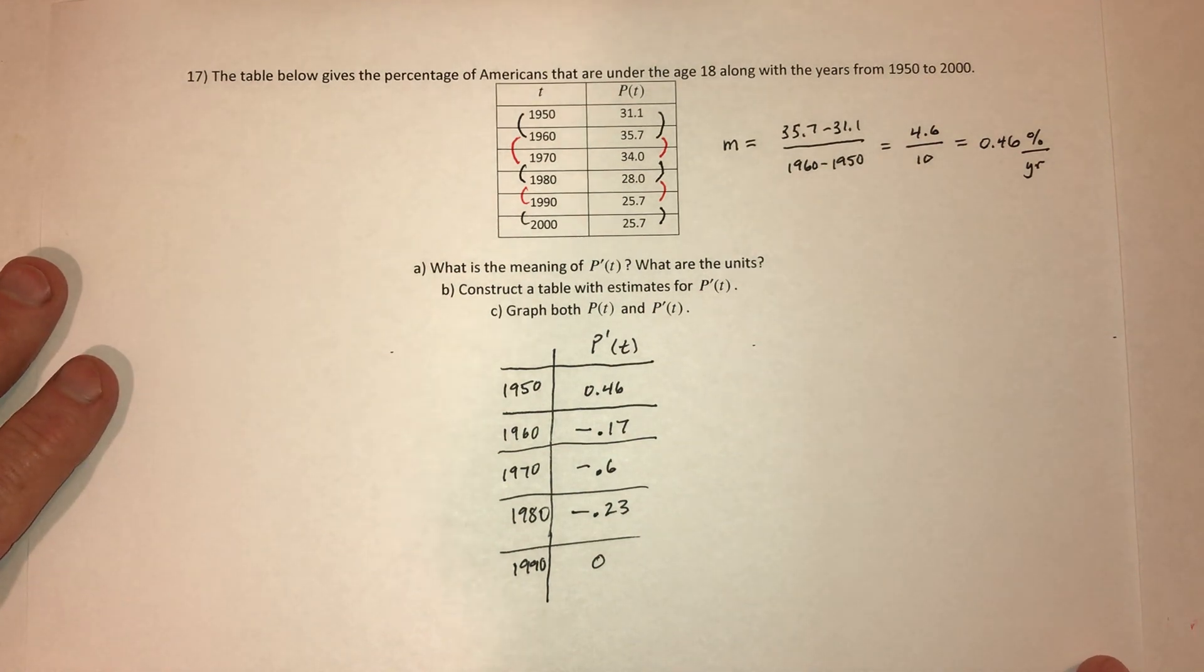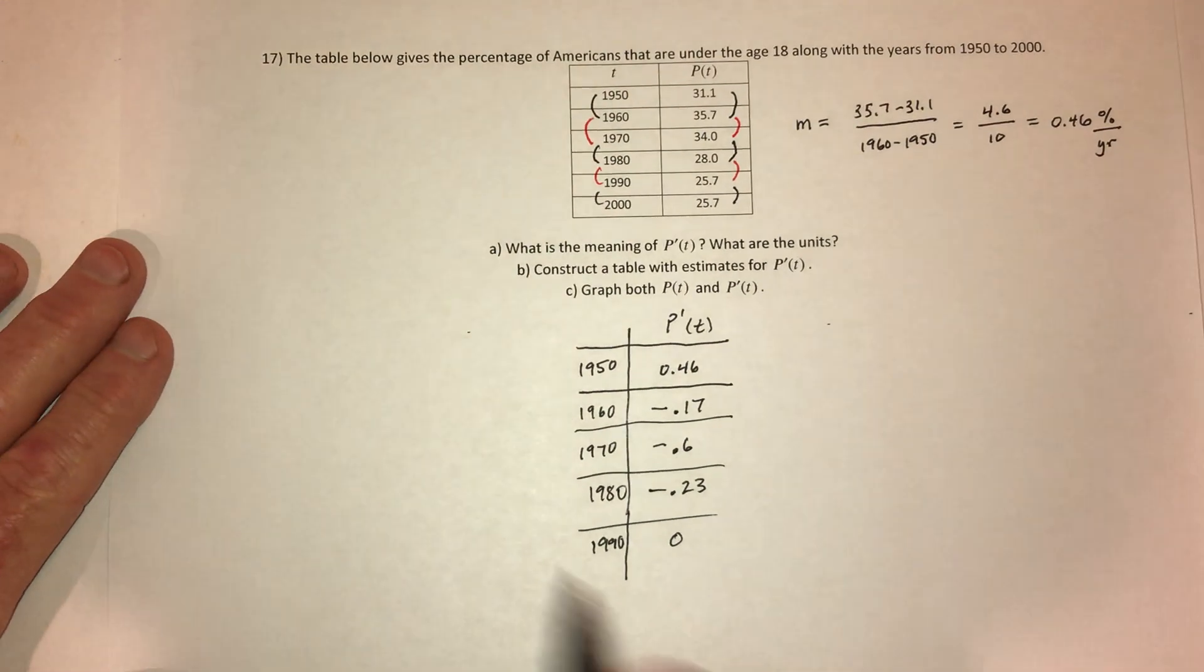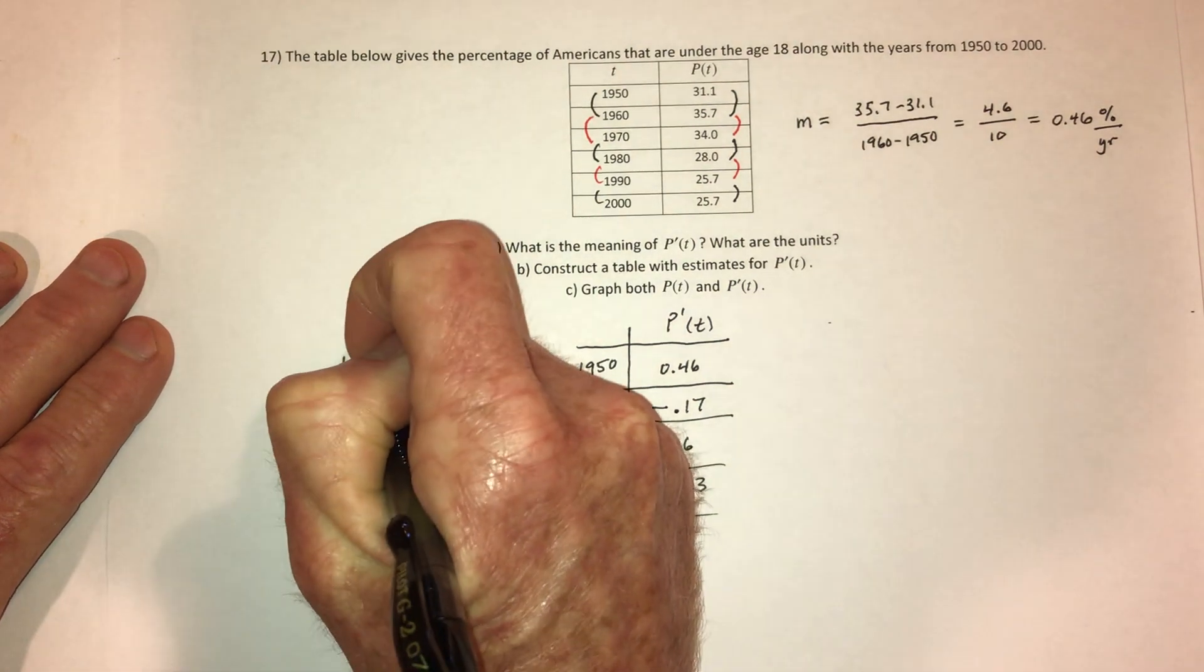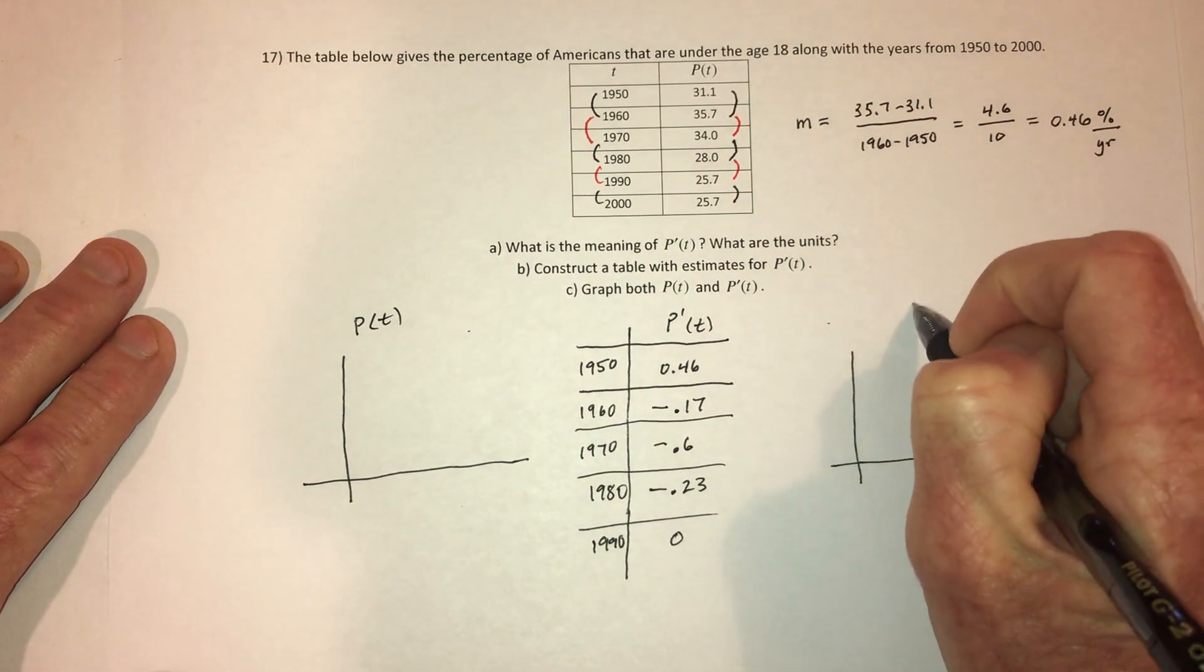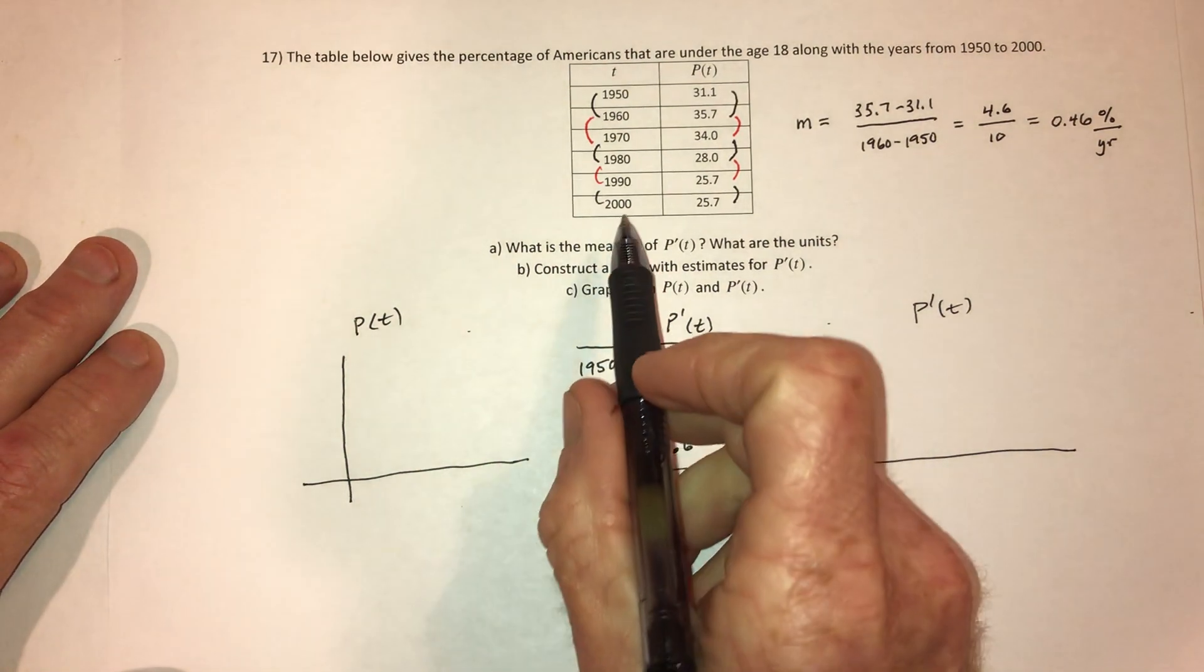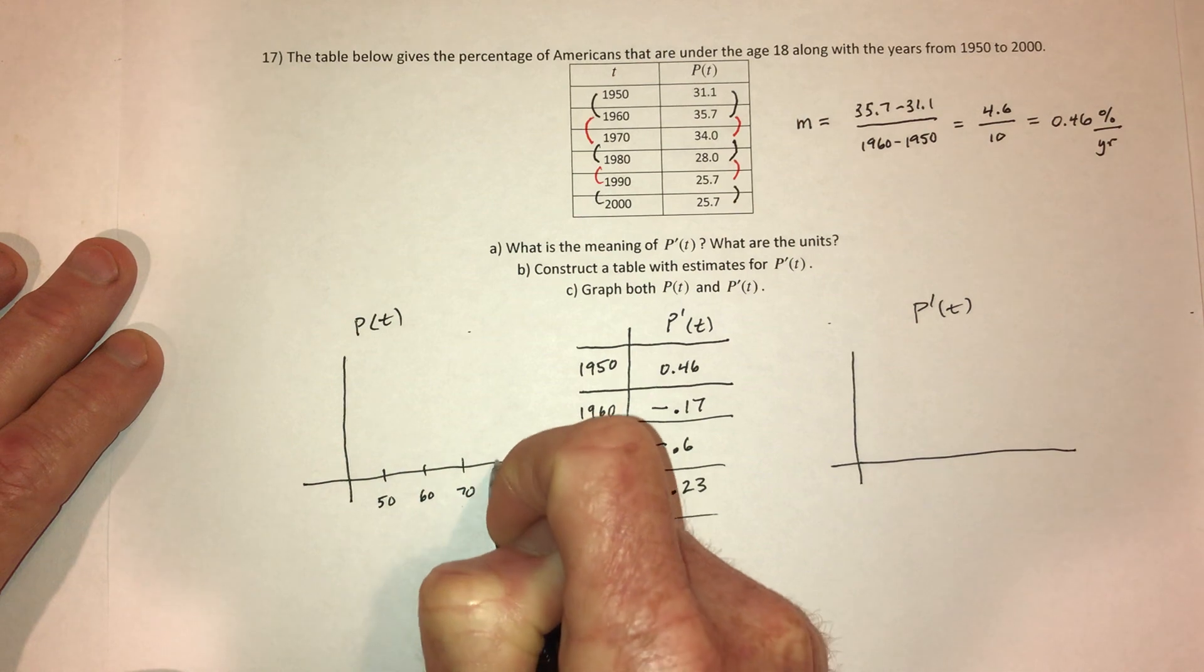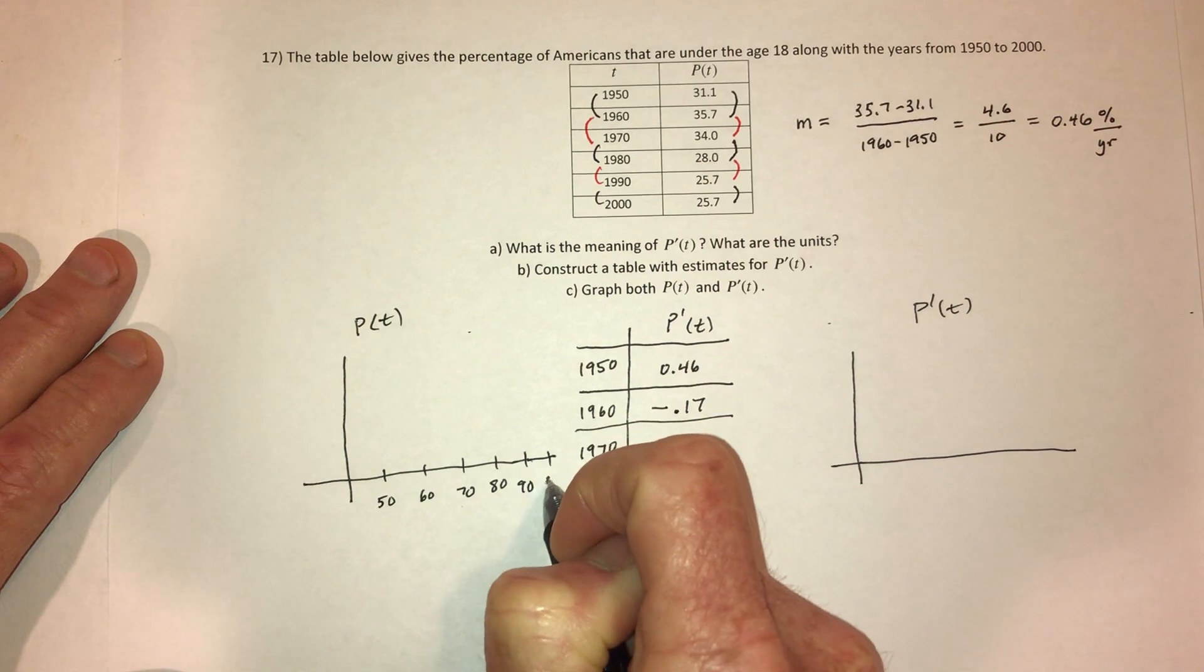And then graph both of these. So let's see. Make sure that I have enough space. So I'll graph the P function over here. And then I'll graph the derivative over here. So the years will be on the bottom. So I'm not going to write out the whole 1950, etc. But there's the 50s, the 60s, 70s, 80s, 90s. Just barely going to make it 2000.